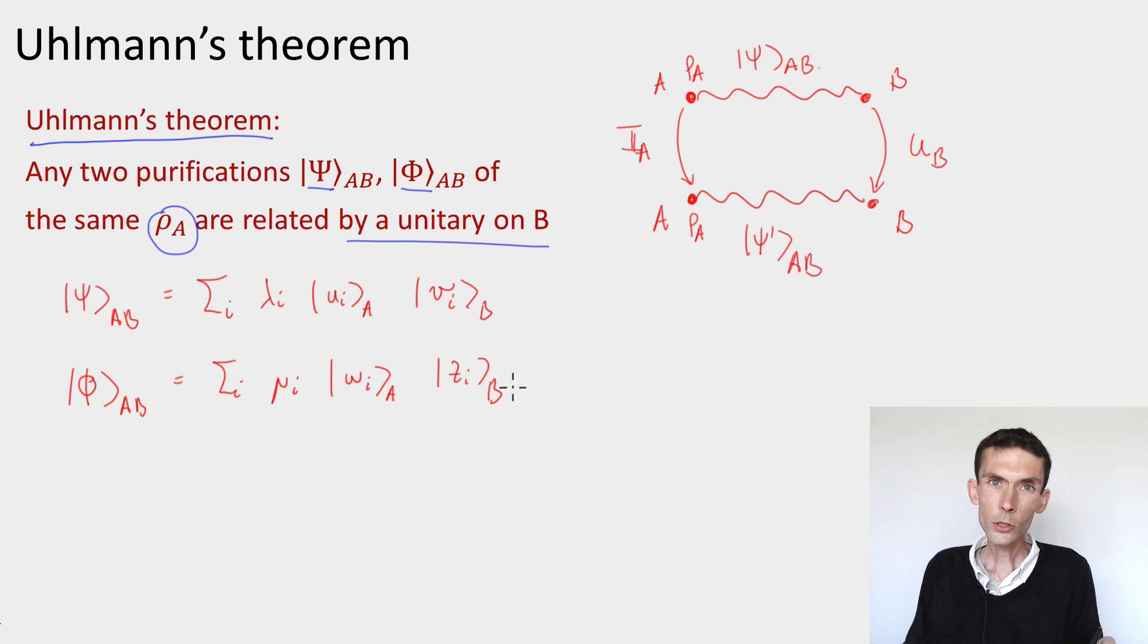Now we saw that there's sometimes a little bit of freedom in the choice of the Schmidt decomposition, but not much. In particular we can infer a lot about these coefficients and vectors by looking at the reduced density.